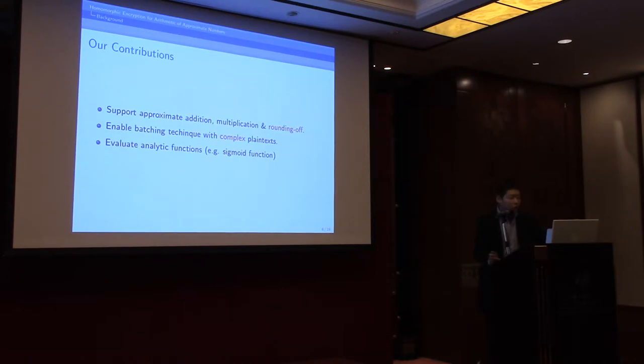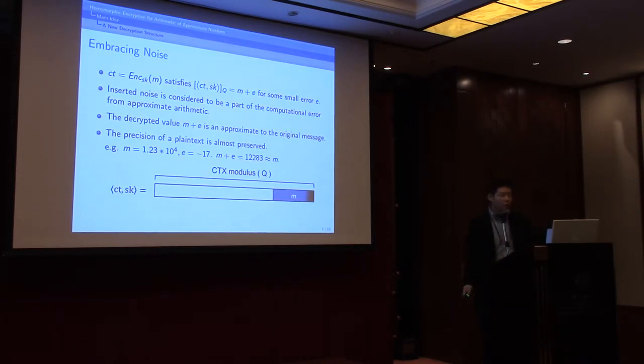In this talk, I'm going to introduce a new method to construct homomorphic encryption with three operations: addition, multiplication, and rounding operations. We have a new idea to enable batching technique to encrypt a vector of complex numbers in a single ciphertext, and I'll show you some implementation results based on our scheme.